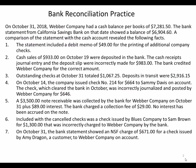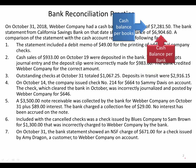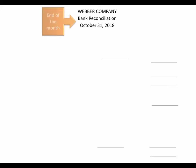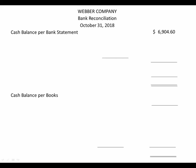On October 31, Weber Company had a cash balance per books of $7,281.50. The bank statement from California Savings Bank on that date showed a balance of $6,904.60. So here we have immediately identified our starting point: our cash balance in our accounting records and our cash balance per the bank. When we go to prepare our bank reconciliation, we're going to prepare it as of the end of October, because we're comparing all of the activities that occurred in the books and all the activities that occurred in the bank during October.